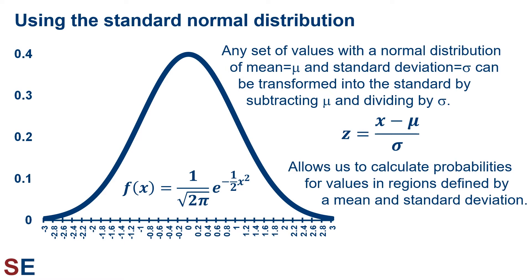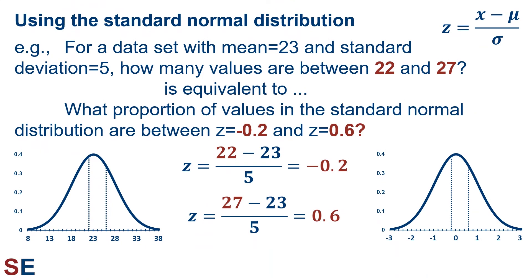For example, if we wanted to know what proportion of the values in our original dataset are in the center region bounded by one standard deviation above and below the mean, that corresponds to the center region of the standard normal distribution from z equals negative 1 to positive 1. Instead of doing integrals for all the different possible normal distributions, we can transform them into the standard normal distribution. For a dataset with a mean of 23 and a standard deviation of 5, we might be interested in how many values are between 22 and 27. Those values can be transformed into z values of negative 0.2 and positive 0.6 using z = (x minus the mean) divided by sigma, making our question equivalent to asking what proportion of values in the standard normal distribution are between z equals negative 0.2 and z equals positive 0.6.